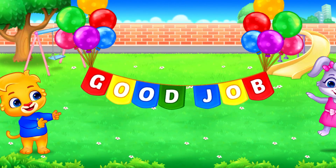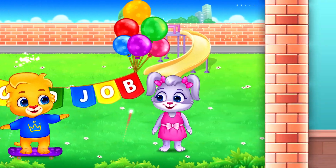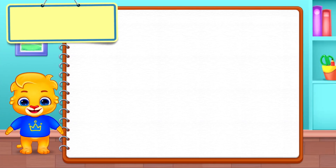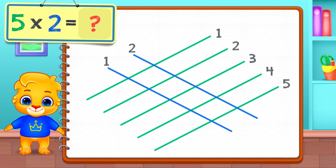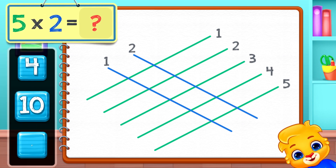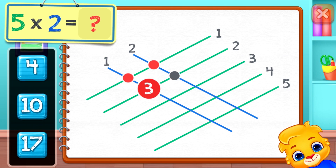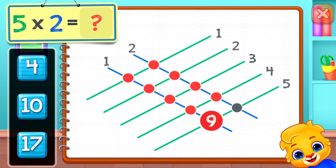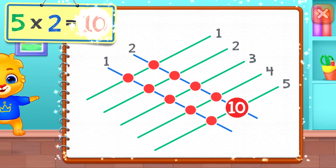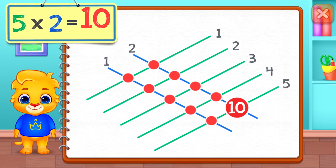Good job! Five times two equals — one, two, three, four, five, six, seven, eight, nine, ten. Five times two equals ten.